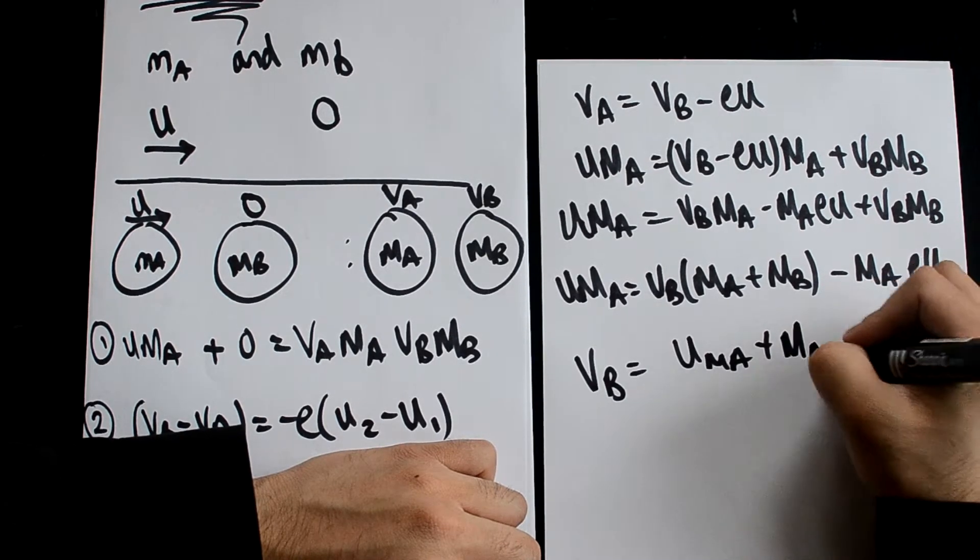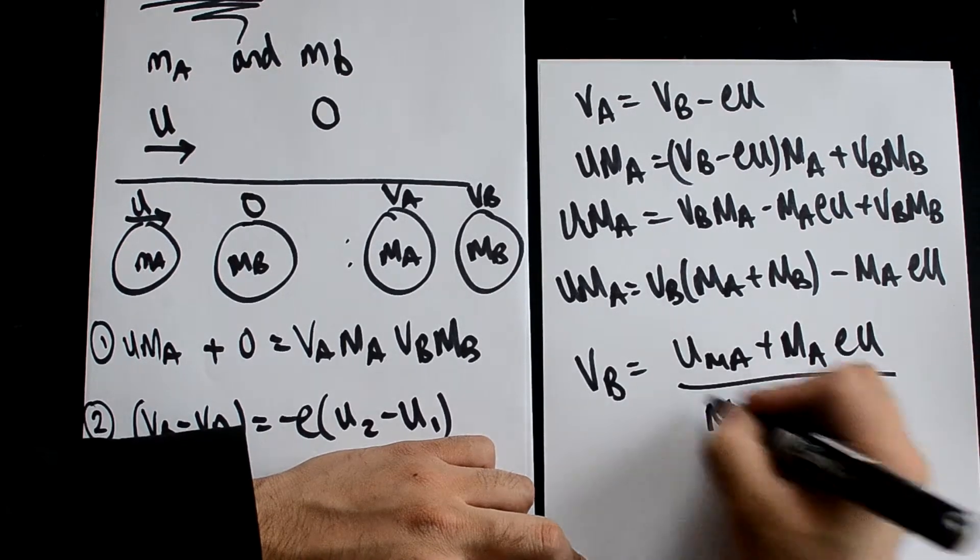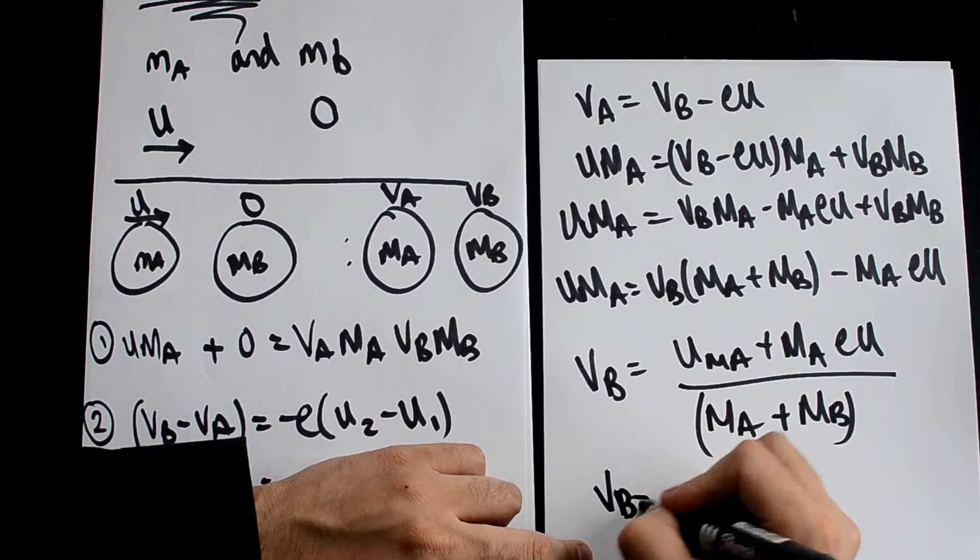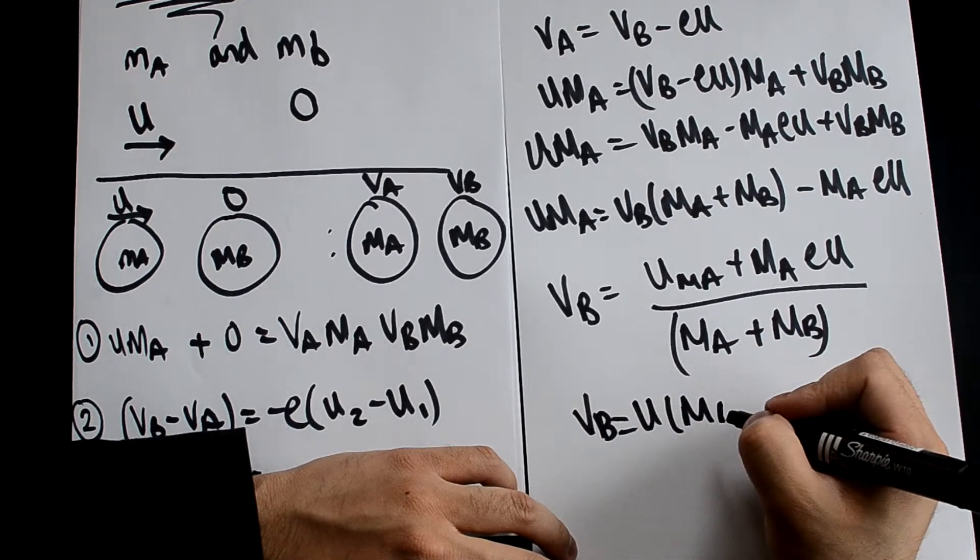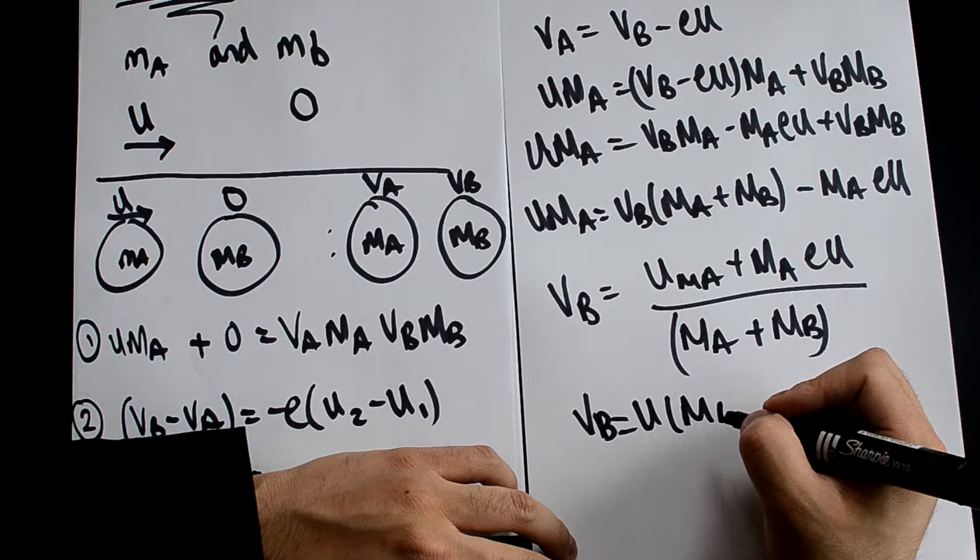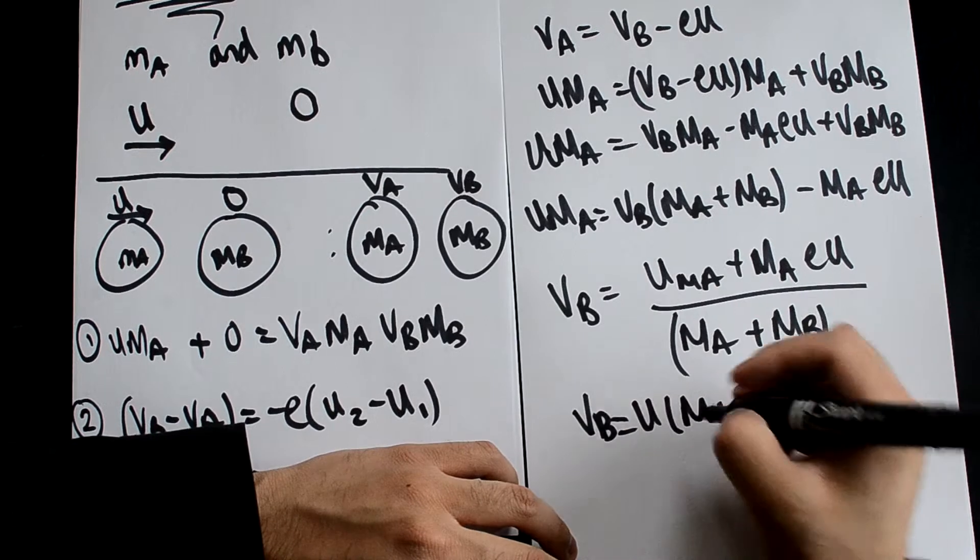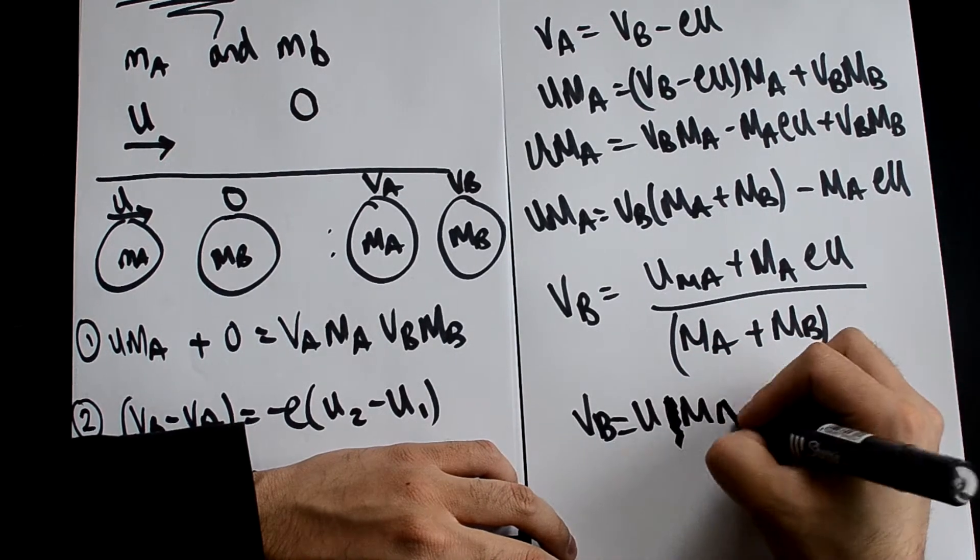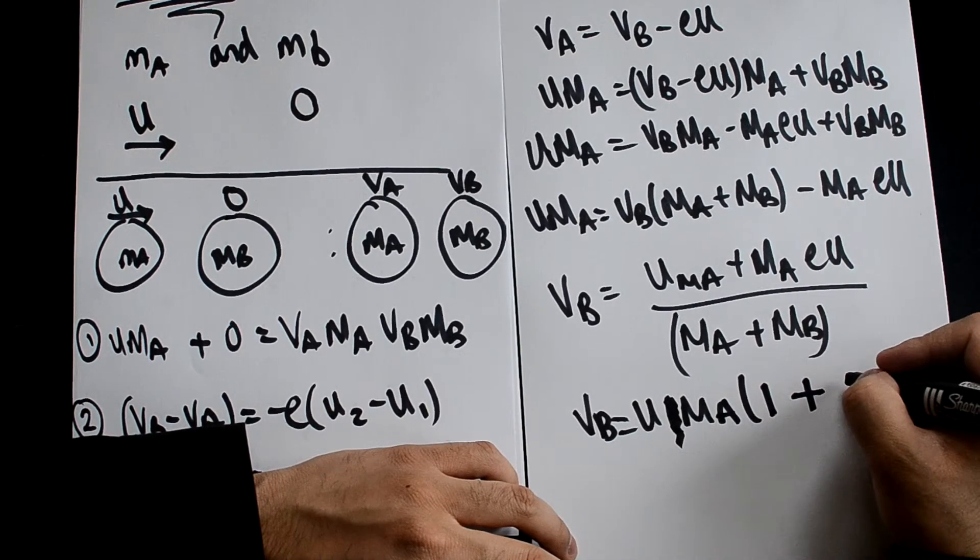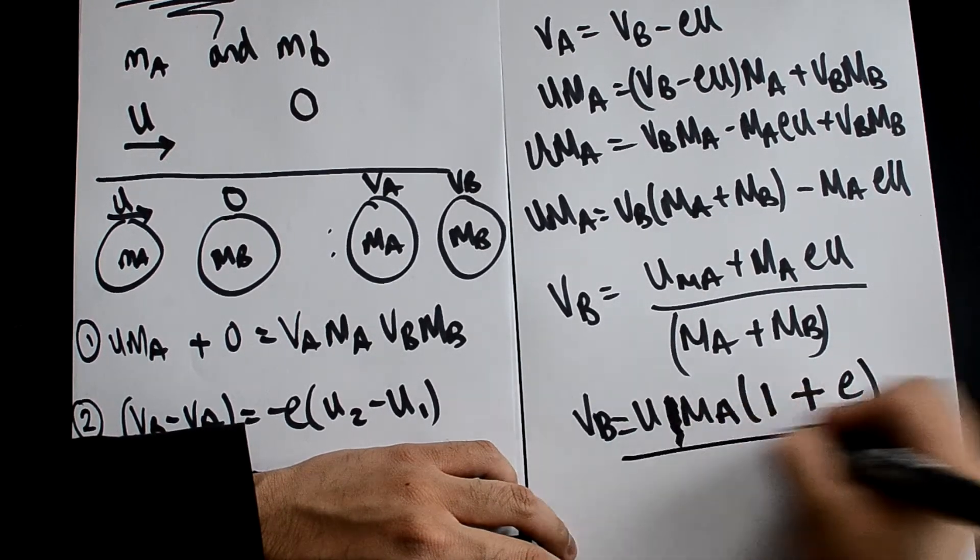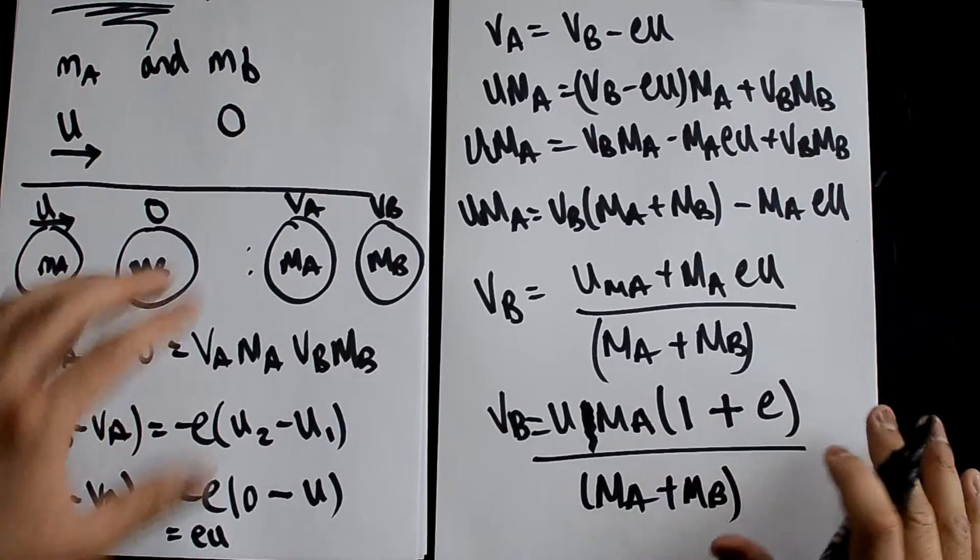Let's wrap this one up. You get (u ma plus ma e u) over (ma plus mb), which simplifies into u ma times (1 plus e) all over (ma plus mb). There we go.